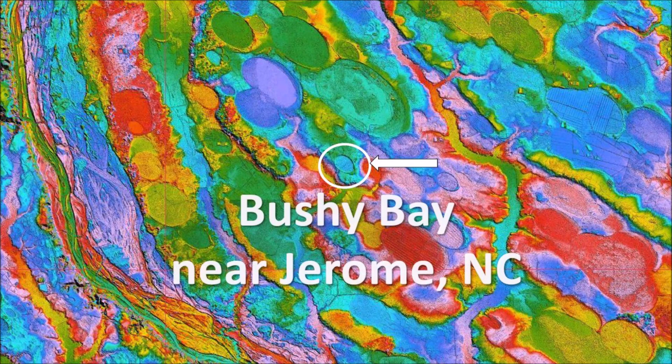Bushy Bay is one of many Carolina Bays populating the terraces of the Cape Fear River Valley in Bladden County, North Carolina. Although the bay has a major axis of 910 meters, it is relatively small compared to the adjacent bays. Every bay is unique and deserves to be studied in order to understand the physical forces and geological mechanisms that created the bays.